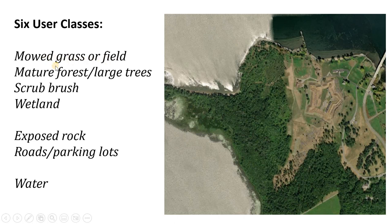Those seven classes are: mowed grass or field, mature forest, scrub brush, wetland, exposed rock, roads and parking lots, and water. Keep in mind this is going to be challenging. These four classes are all essentially shades of green, so they're going to be tricky to deconvolve. Likewise, exposed rock and roads are often confused because roads are often made of crushed rock like gravel or concrete. Water you'd think would be easy, but it's actually tricky because the water in this picture has some different solar illumination characteristics.